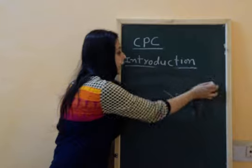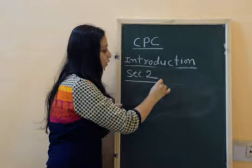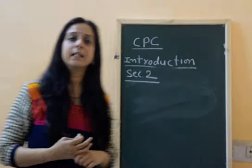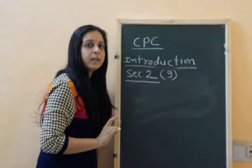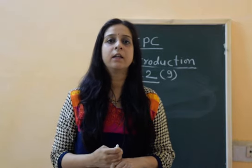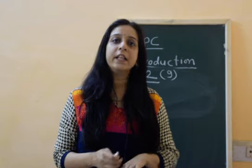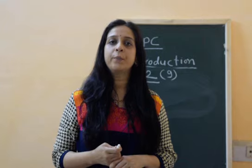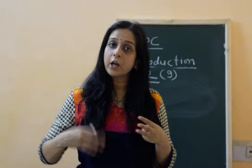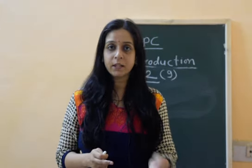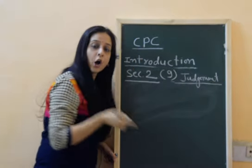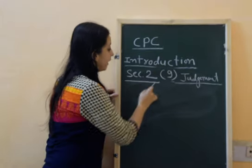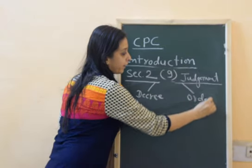The second section is the definition clause. Section 2 contains definitions of various terms and this is the most important part of CPC. The first definition we are going to discuss is under Section 2(9) — the definition of judgment. When we talk about what is a judgment: judgment is the formal expression of a judge in the form of a decree or order. The judgment is given by a judge in a formal format which is followed by the judge.